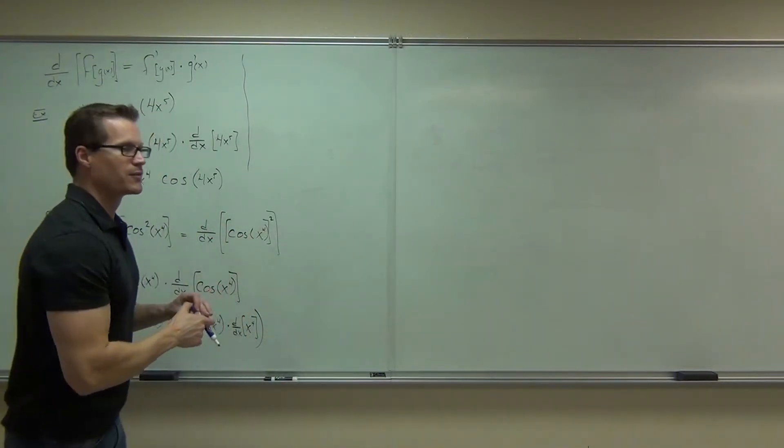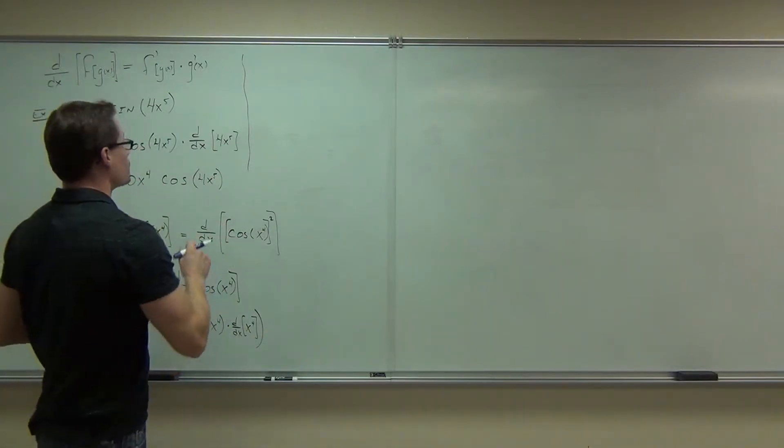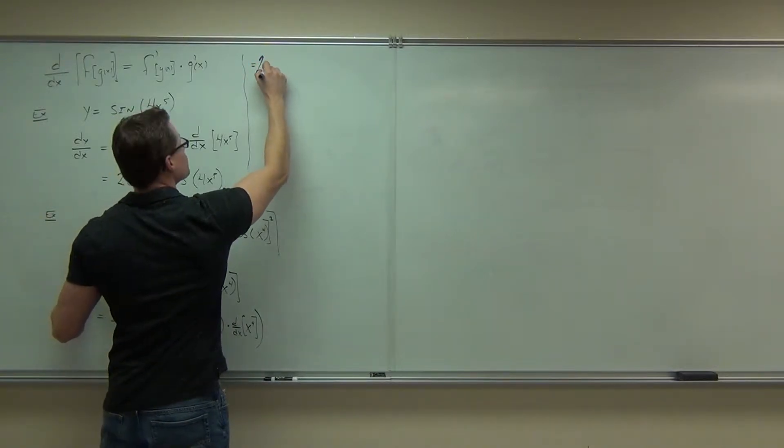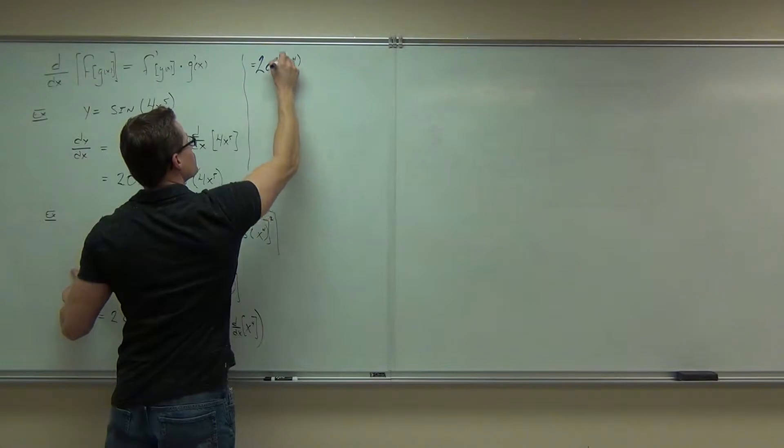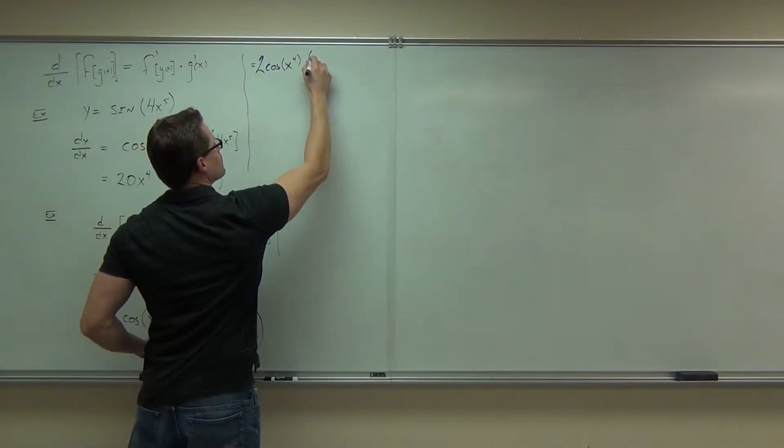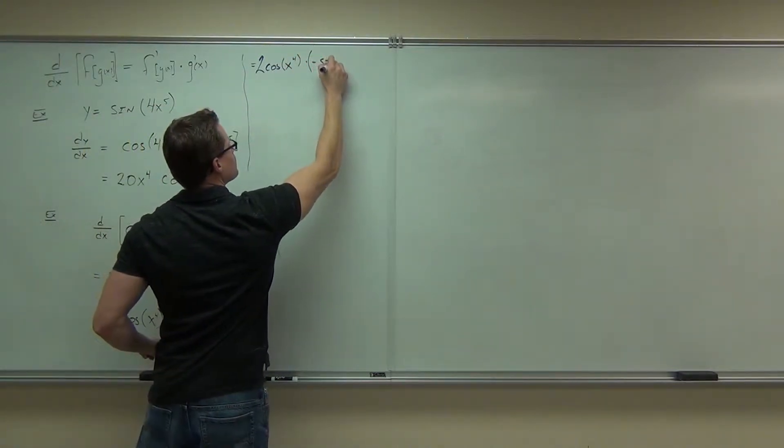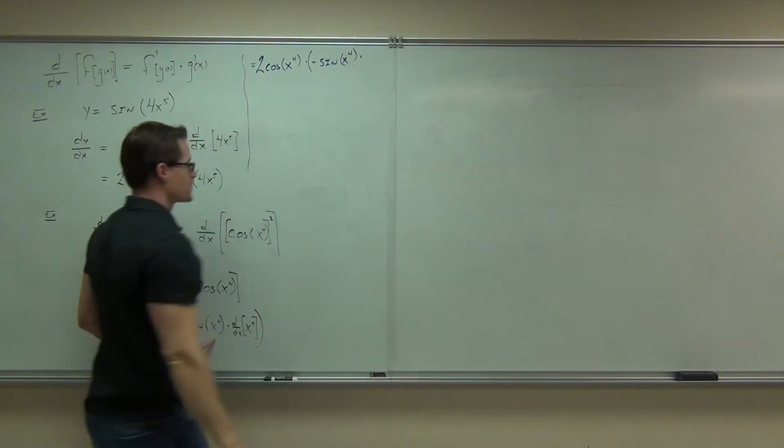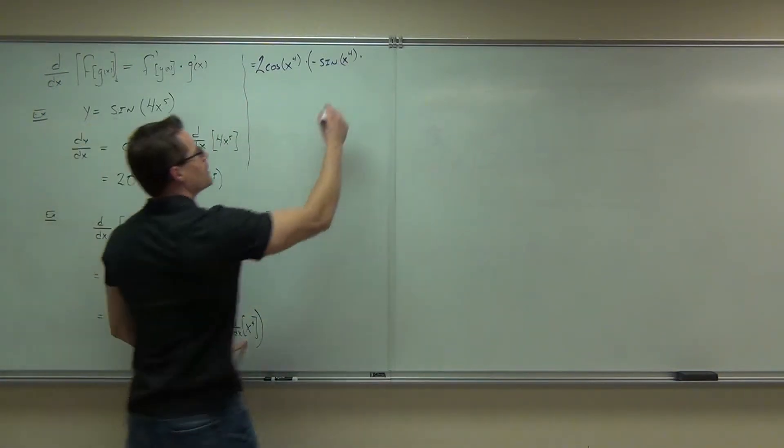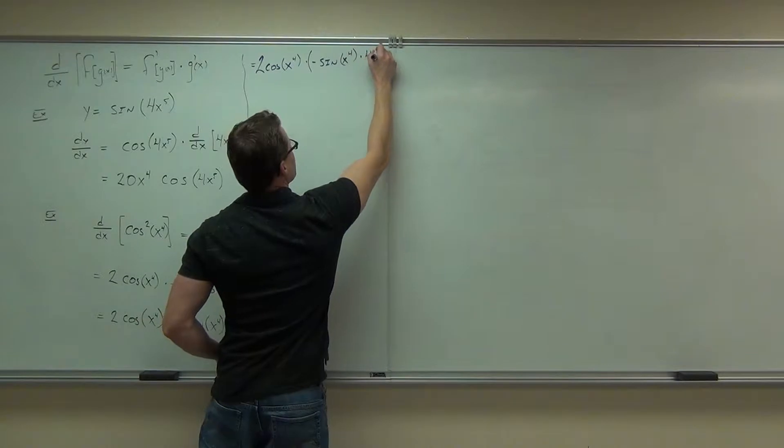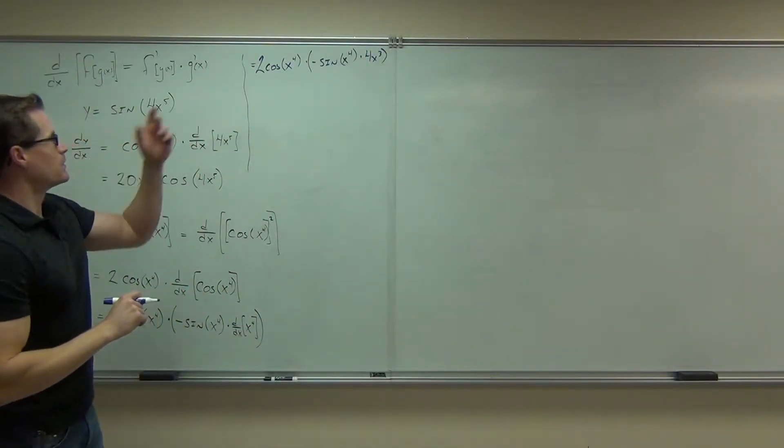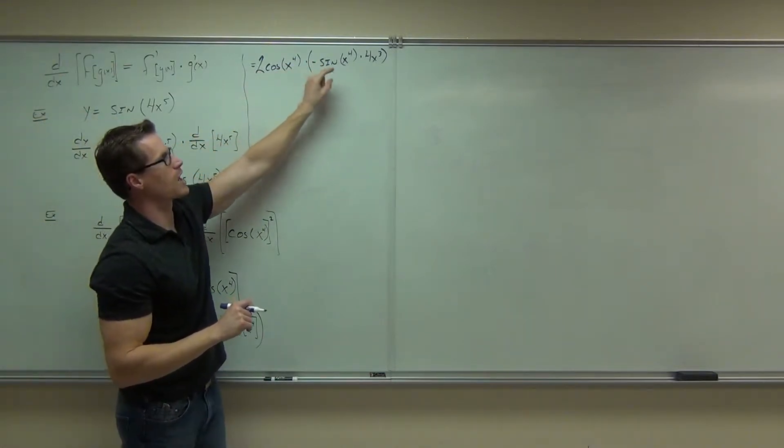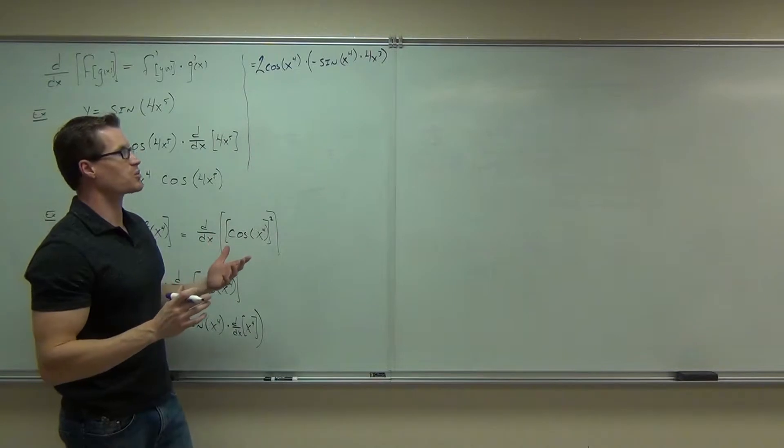Sometimes. Every time you use a rule, it breaks it down into little pieces for you. Times what is that? 4 plus. Cool. Negative. I'm sorry, 2 cosine x to the 4th times negative sine x to the 4th times 4x cubed.